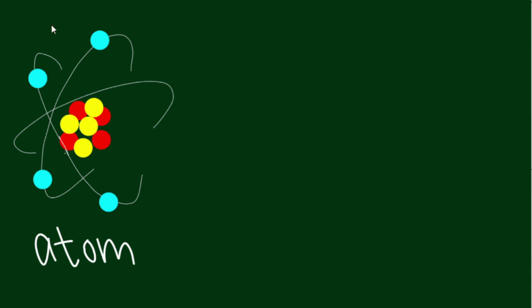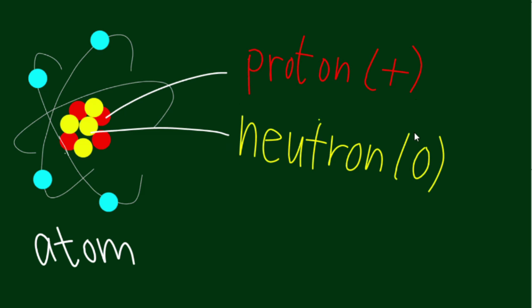Atoms are made of positively charged particles called protons, particles with no charge called neutrons, and negatively charged particles called electrons.